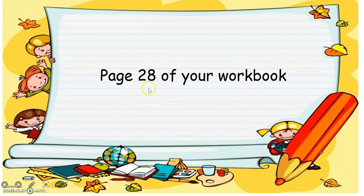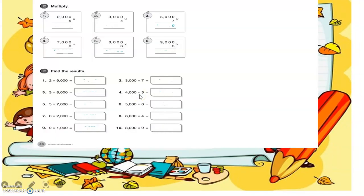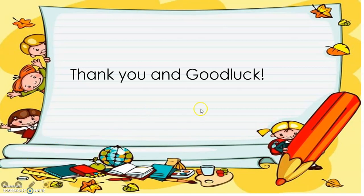That is multiplication. For your workbook, go to page 28 — exercises E and F on page 28. That's all, guys. Hope you understand. Thank you, good luck, see you again. Goodbye!